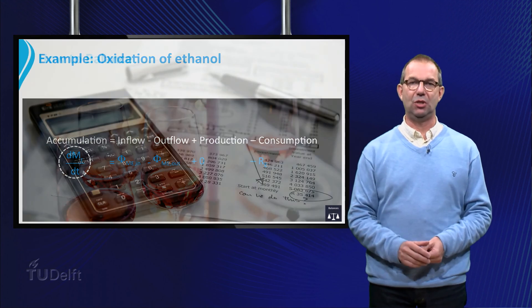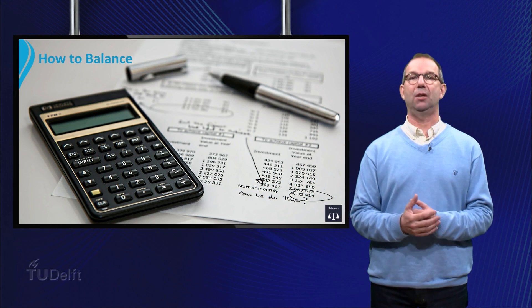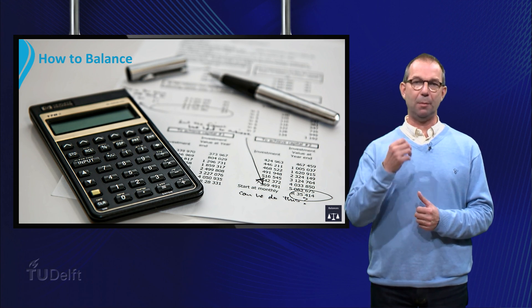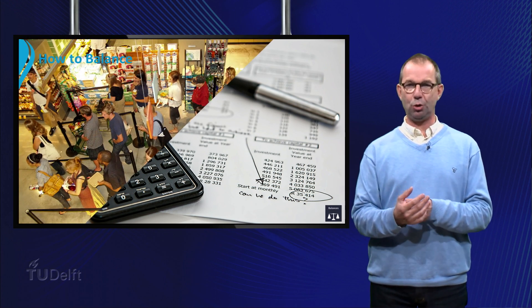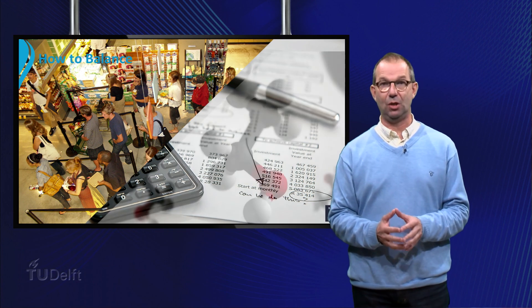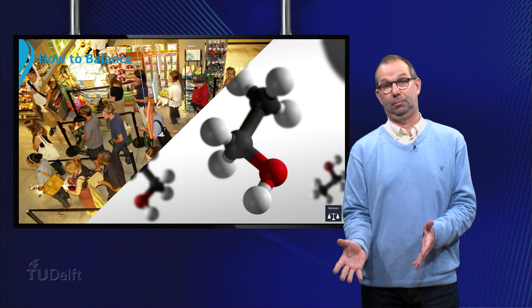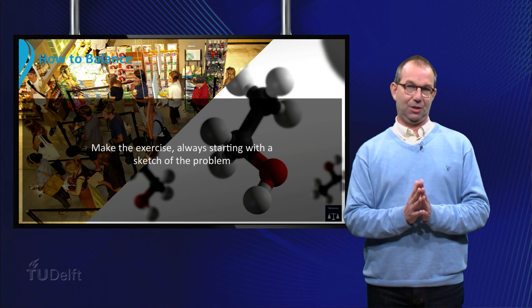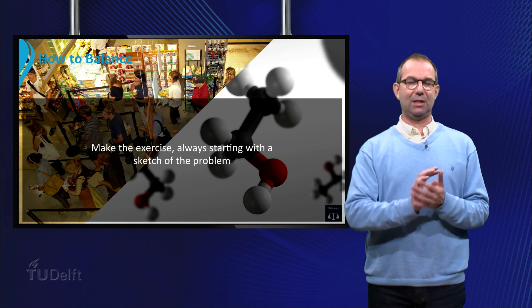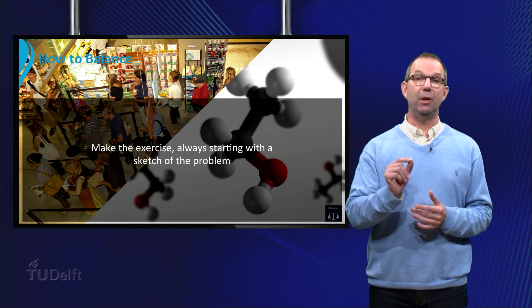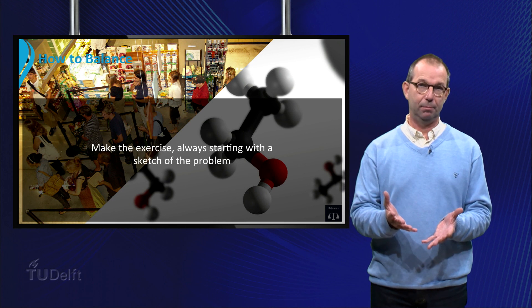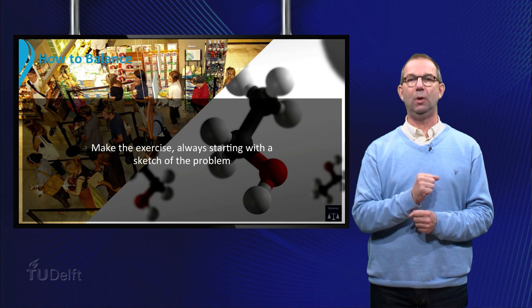Summarizing we can say that setting up a balance is indeed a kind of bookkeeping. You can apply it to people, but also to certain chemical species like ethanol in a process. That's all for this lecture. Please make the exercises always starting with a sketch of your problem. Good luck and see you at the next lecture.